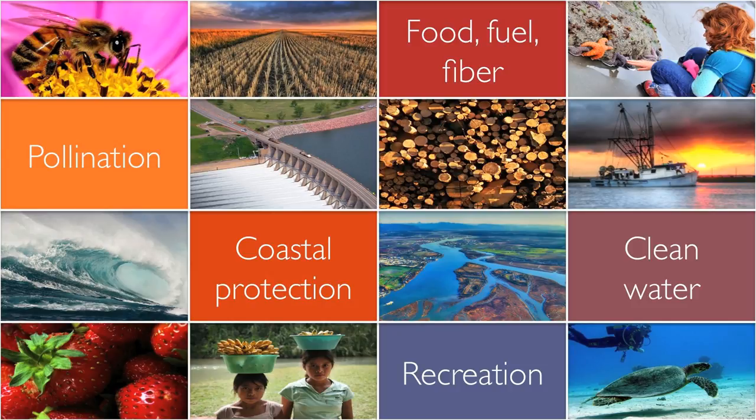Ecosystem services are everywhere. They sustain and fulfill human life. They come in the form of goods like food, fiber, fuel, and clean water. They come in the form of services like pollination of food crops and protection of people and property from coastal hazards. And they come in the form of opportunities for recreation, inspiration, and education.